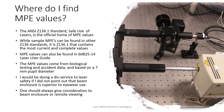Where do we find these values? The ANSI Z136 standard, safe use of lasers, is the official home of MPE values. While other ANSI standards may have a sampling of MPE values, the most current values based on the latest data are found in Z136.1. MPE values can also be found in the European standard 60825-14, the laser user's guide. MPE values are not some abstract mathematical number — they come from biological testing and data over time.